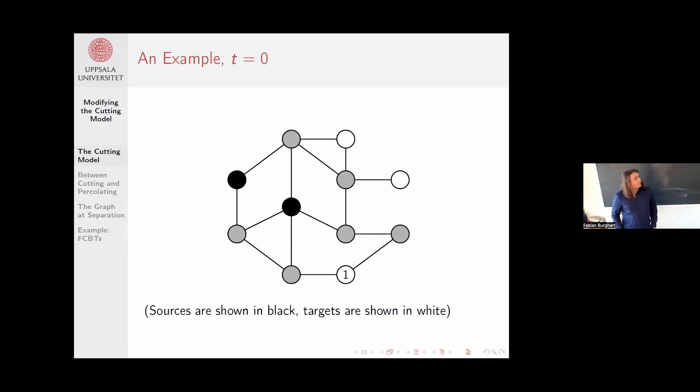So let's look at a simple example. You have this graph. The black vertices are the sources, the white vertices are the targets, the gray vertices are just normal vertices. This is at time zero, and the one indicates the first vertex to take this.